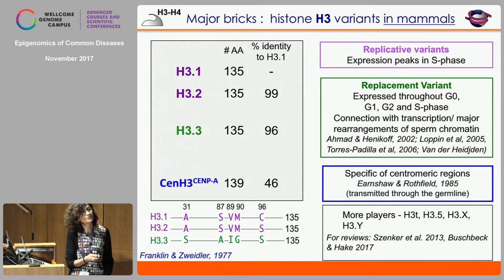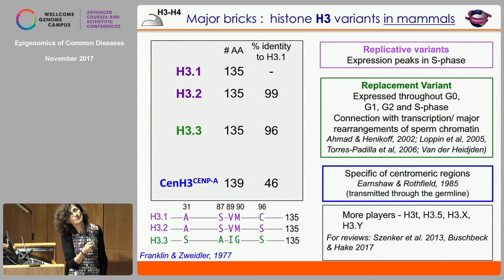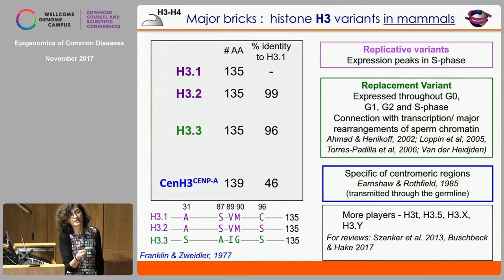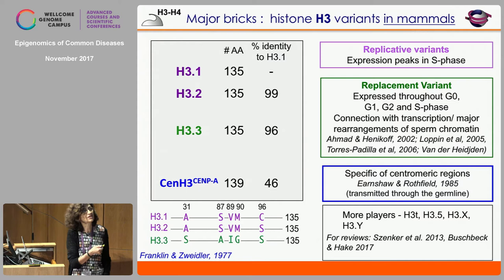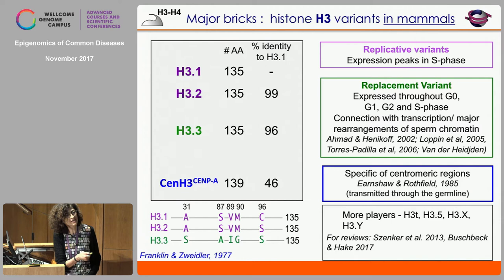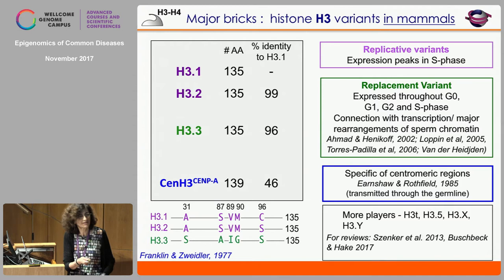For the histone H3 variant in mammals, they come in three different flavors. There are the replicative variants H3.1 and H3.2, whose expression peaks in S phase. There is the H3.3 replacement variant, expressed throughout all phases of the cell cycle, accumulating in quiescent and long-lived cells, highly connected with transcription and with major rearrangements observed on sperm after fertilization — differing from the replicative variant at four or five amino acids. Then there is the most extreme variant, sometimes called deviant — CenH3 or CENP-A in mammals — specific to the centromeric region, marking where you build up the kinetochore.